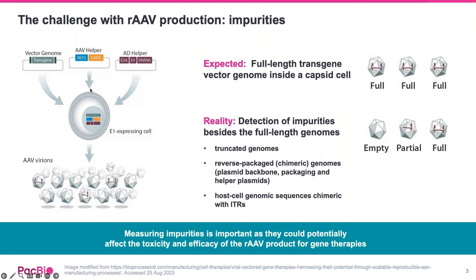The challenge with recombinant AAV is that to package your construct of choice into the capsid, multiple plasmids are typically transfected into a host cell to produce the variants. As a result, in addition to variants containing the expected full-length transgene construct from the vector genome plasmid, there will also be AAV particles containing partial genomes and other impurities. Those partial genomes can be a variety of species: truncated genomes, reverse-packaged chimeric genomes encompassing sequences from the plasmid backbone as well as packaging and helper plasmids, and host cell genomic sequences chimeric with ITR-containing vector sequences.